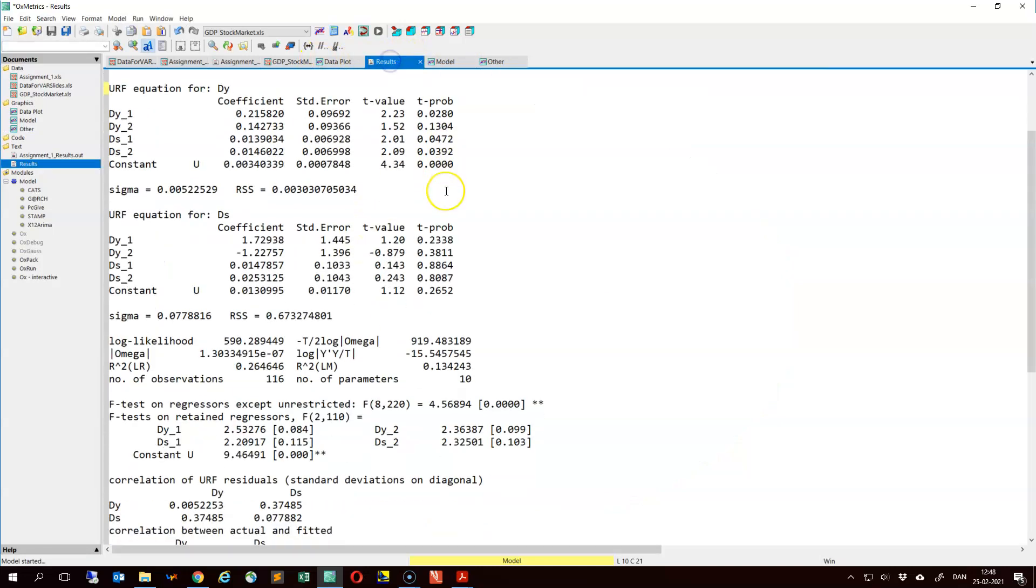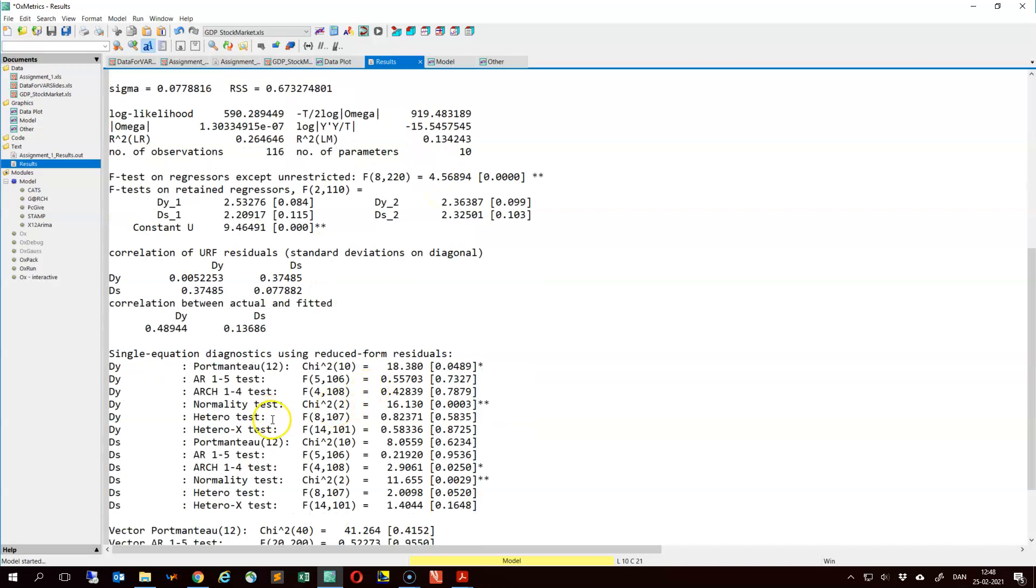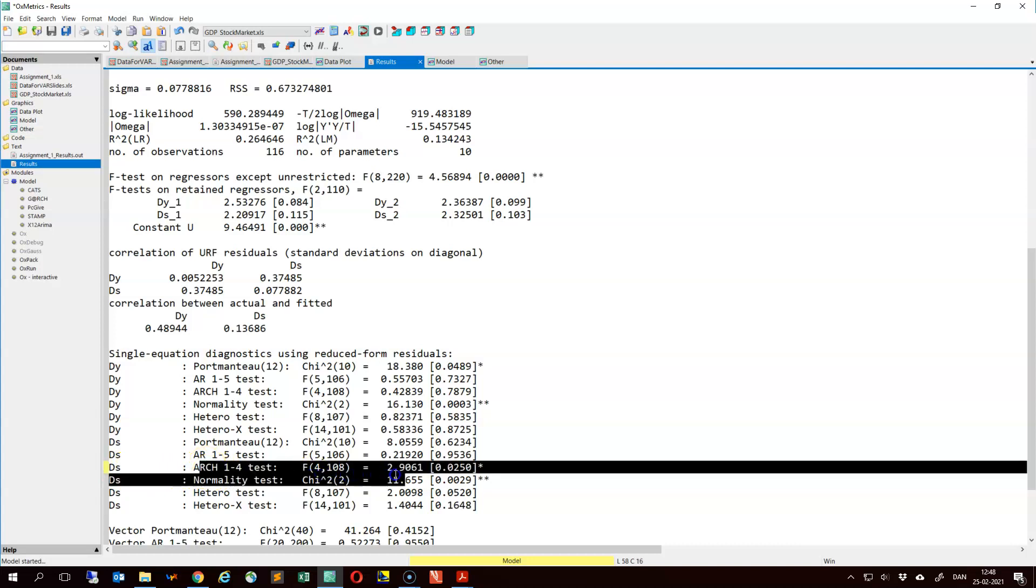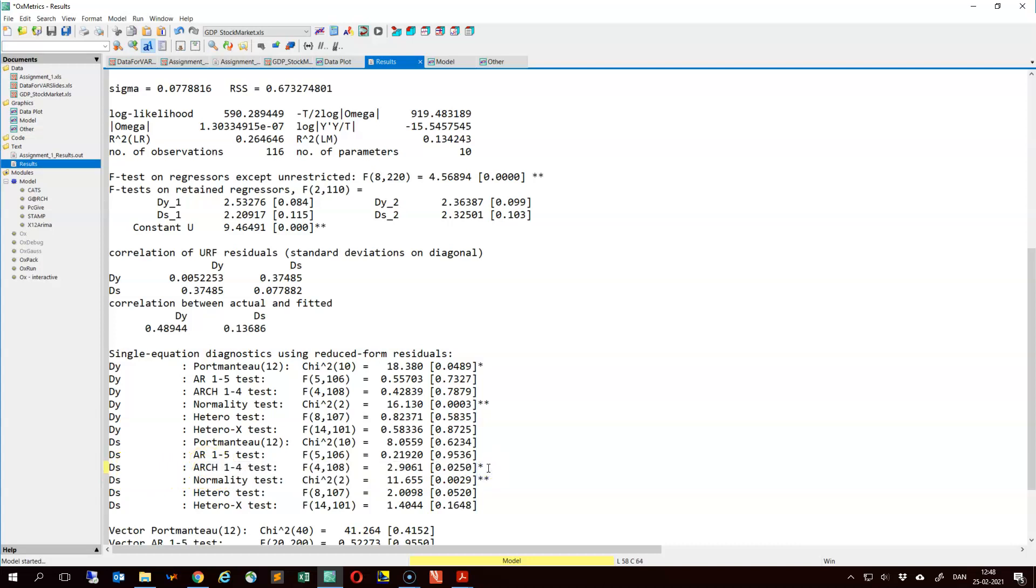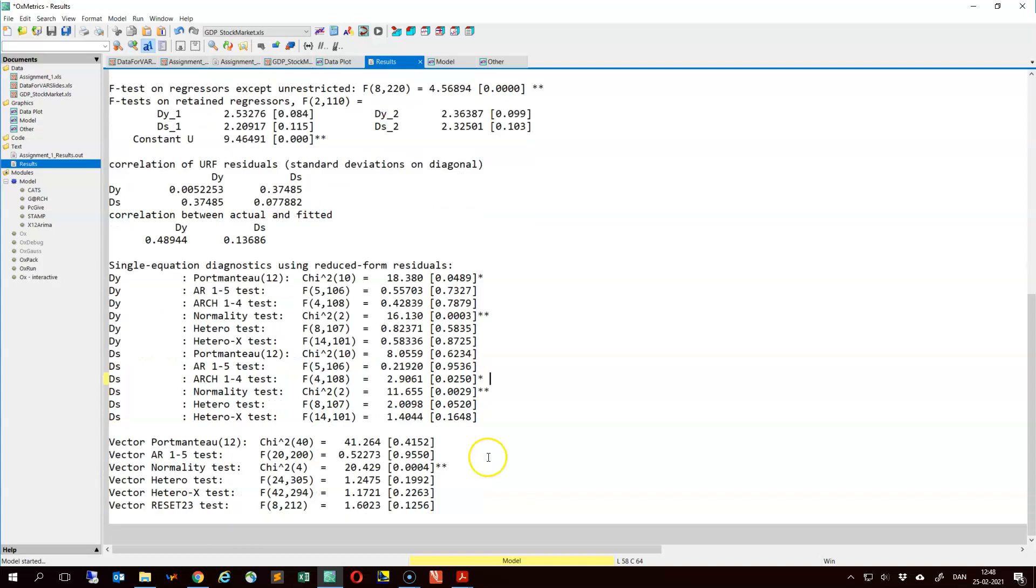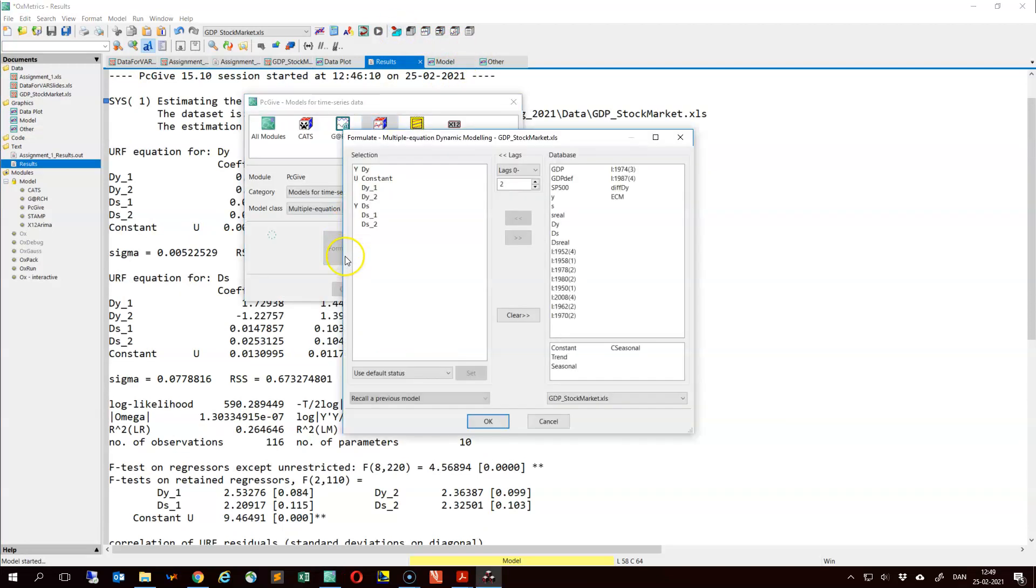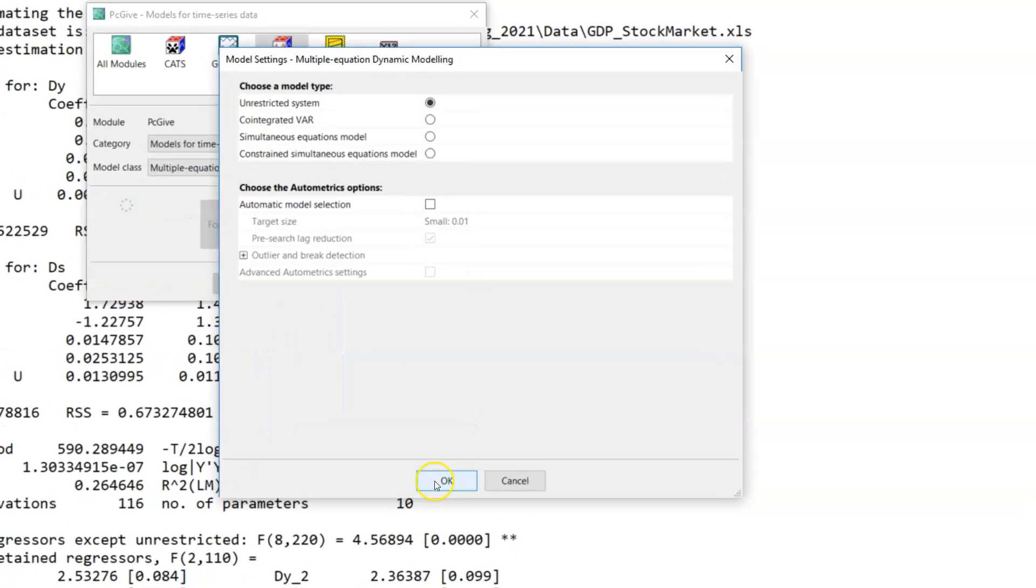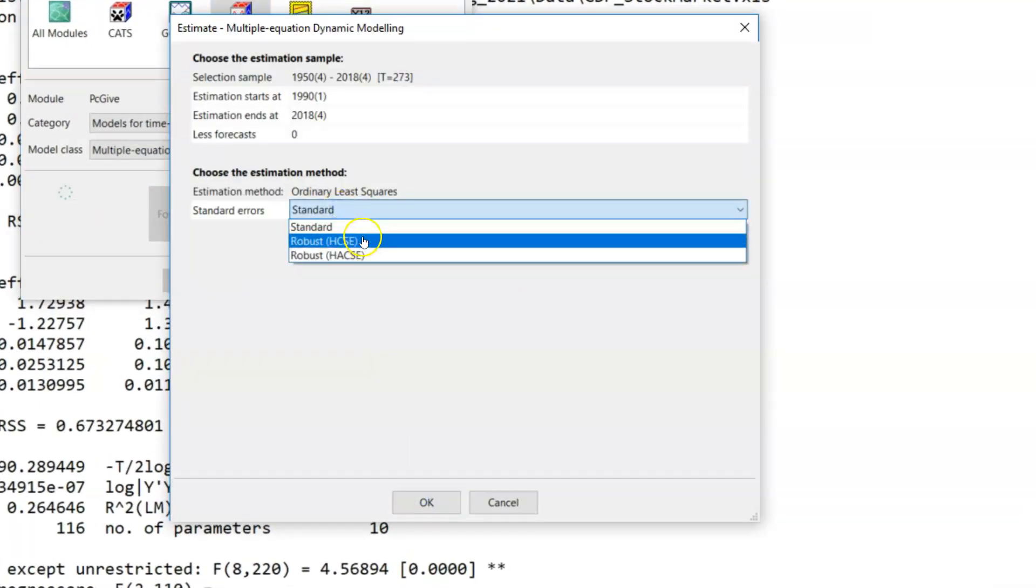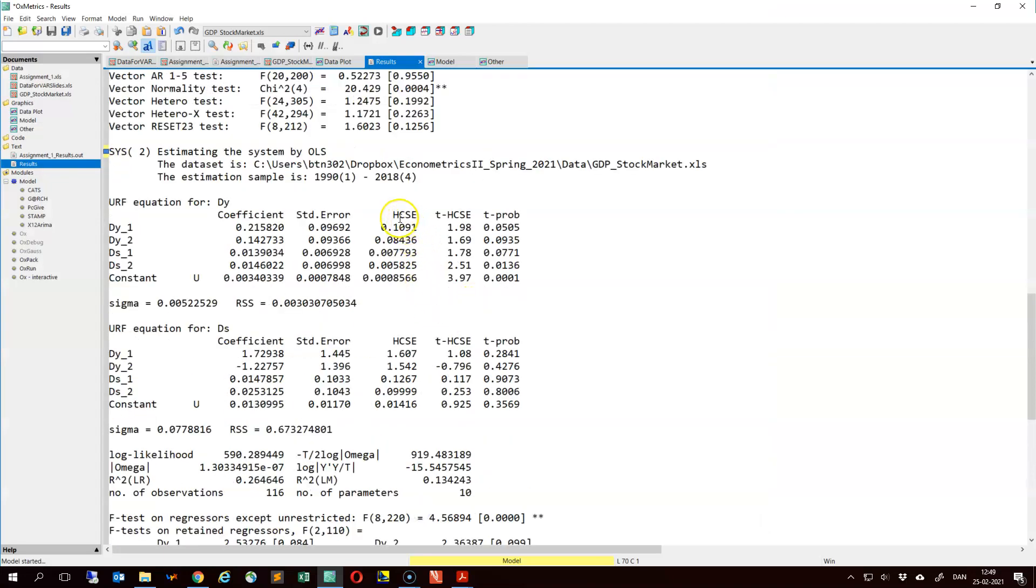Going back to the estimation output, we may note that for the equation for the S&P 500 returns, we have some ARCH effects. So we have some heteroscedasticity. In order to do inference, we may then adjust the standard errors for this heteroscedasticity. So we can estimate the model again and then choose robust heteroscedasticity-consistent standard errors. These are reported here.